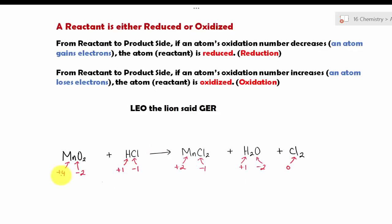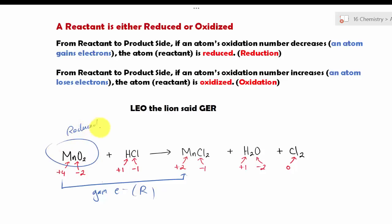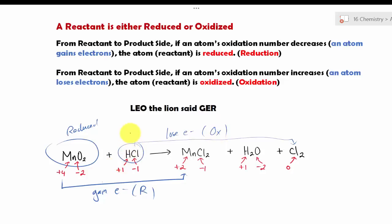Let's try another problem. Here we have manganese starting from plus four all the way to plus two. The oxidation number is less, so the only way that is possible is by gaining electrons — that is reduction. So this substance here is being reduced. For oxygen, it's minus two and stays minus two in the product, so no change. For hydrogen, it's plus one and plus one — no change. For chlorine, it has minus one on the reactant side, and also minus one in one product, but then zero in another. So there is a change: the oxidation number increases, meaning it loses electrons and undergoes the oxidation process. That reactant containing chlorine is being oxidized.